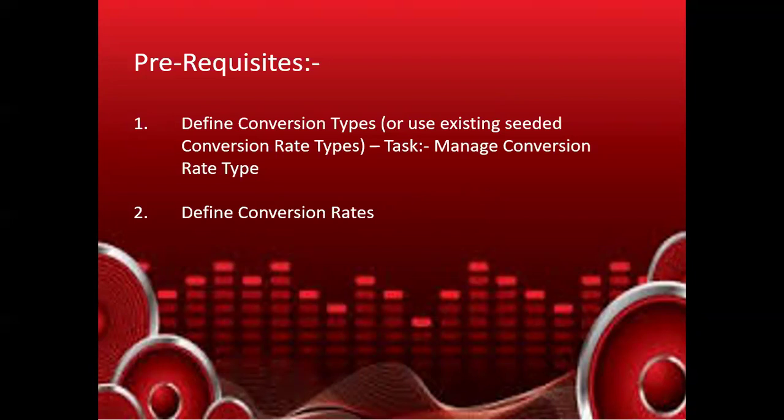Under each conversion rate type you can create a different exchange rate. For example, under Corporate you can specify a particular exchange rate between USD and INR, and under Spot you can enter a different exchange rate. So the first step is to create those conversion rate types or use Oracle's seeded ones, then create the conversion rates, and then proceed to create the foreign currency journal.